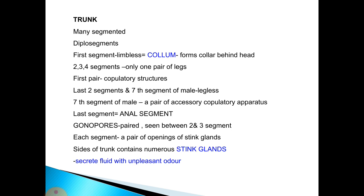The trunk is many-segmented and consists of diplosegments — two segments fused together. The first segment is limbless and known as the collum, forming a collar behind the head. The second, third, and fourth segments have only one pair of legs, and the first pair contains copulatory structures. The last two segments and the seventh segment of the male are usually legless; the seventh segment contains a pair of accessory copulatory appendages. The last segment is the anal segment. The gonopores, openings of the reproductive organs, are paired and seen between the second and third segments.